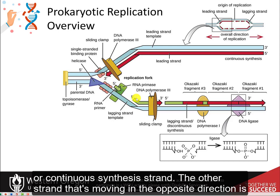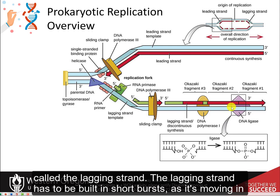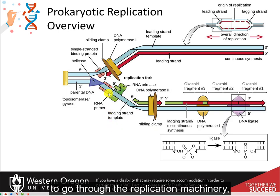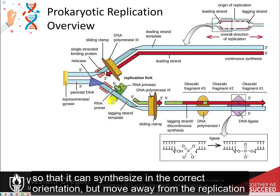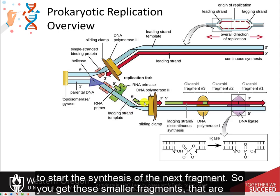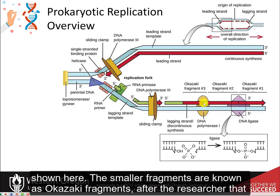The other strand that's moving in the opposite direction is called the lagging strand. The lagging strand has to be built in short bursts as it's moving in the opposite direction of the replication fork. So this DNA has to wind back around and go through the replication machinery so that it can synthesize in the correct orientation, but move away from the replication fork at the same time. Thus, each fragment has to dissociate from the complex and then jump back to start the synthesis of the next fragment. These smaller fragments are known as Okazaki fragments, after the researcher that discovered them.